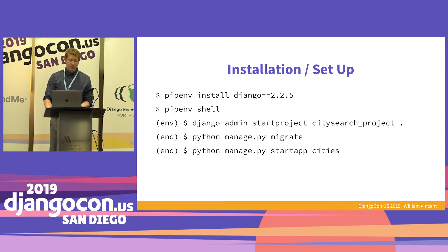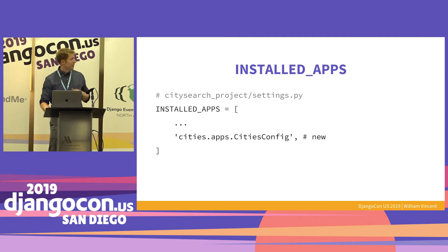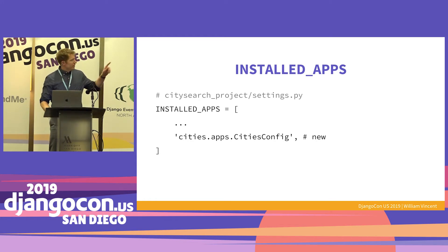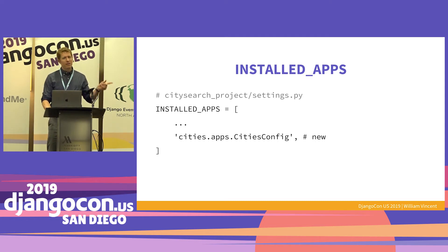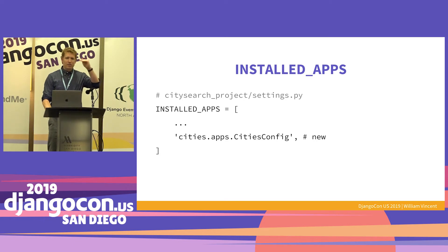Just because we added the app doesn't mean Django knows about it until we add it to the settings file. Use the full app config name rather than just 'cities' to get extra goodies as a best practice. Add it at the bottom of INSTALLED_APPS — it loads top to bottom, and you want things like admin at the top.